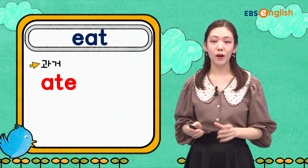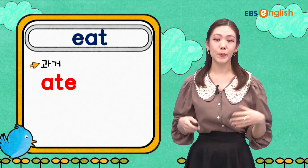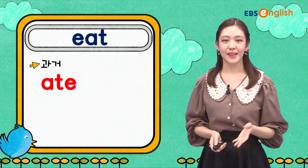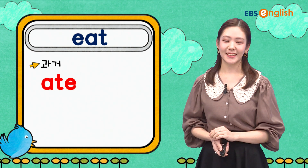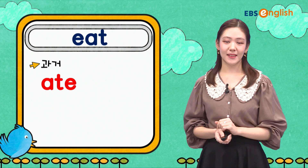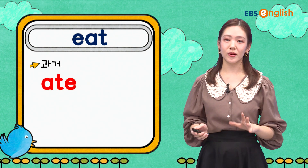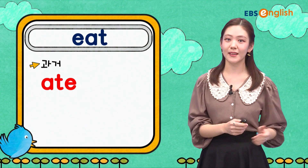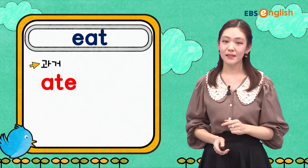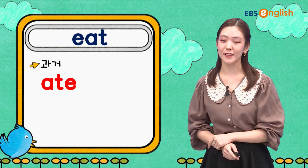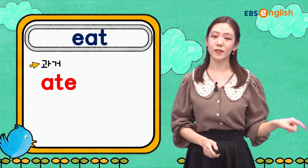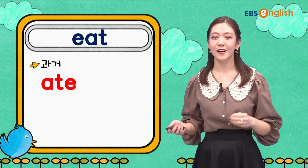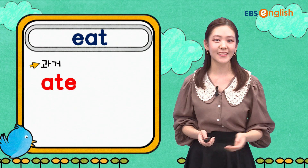Ate. 과거형이죠. 발음이 많이 바뀌어요. Ate. 이거는 먹었다, 과거형을 표현할 때 쓰는 ate가 돼요. He ate at the restaurant. 그는 식당을 가서 먹었다. 어제 먹었을 수도 있고 저번 주에 먹었을 수도 있죠. 과거형을 표현할 때는 ate가 돼요.